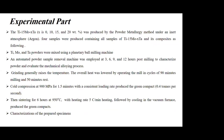For the experimental part, the Ti-15Mo-xTa system was produced by powder metallurgy method under an inert argon atmosphere. Four samples were fabricated. The titanium, molybdenum, and tantalum powders are mixed using a ball milling machine. An automated powder sampling was performed at 3, 6, 9, and 12 hours post-milling to characterize the powder and evaluate the mechanical alloying process. Grinding generally raises the temperature inside the milling vessel, so the overheat was lowered by operating the milling in cycles of 19 minutes milling and 15 minutes rest.